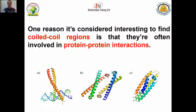The coiled-coil region is considered a very important region because it plays an important role in protein-protein interaction. That's why we should look at this region and try to find if our protein has such a region, to know whether this protein has a protein-protein interaction or not. This is typically a kind of search that we try to perform for such proteins.